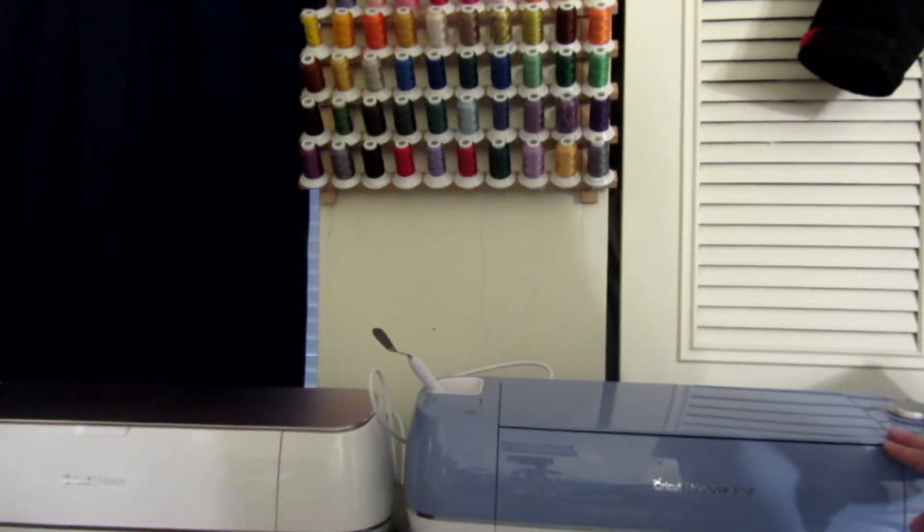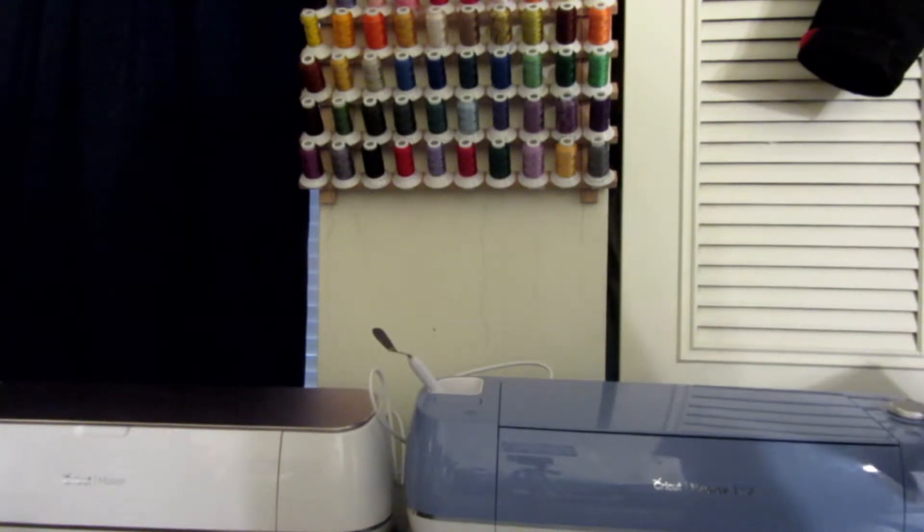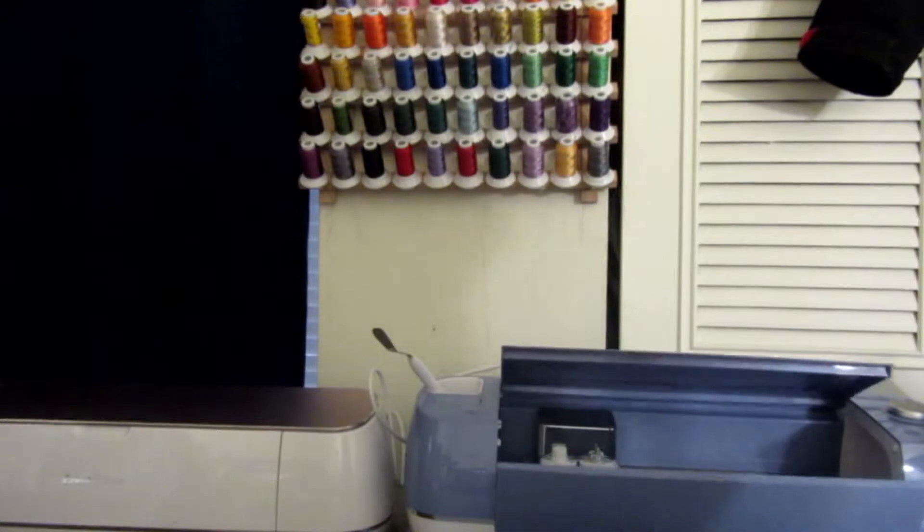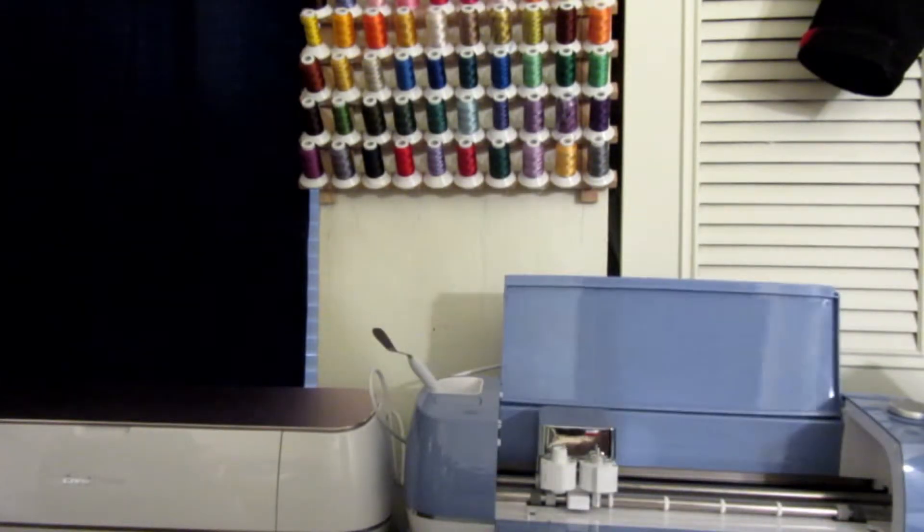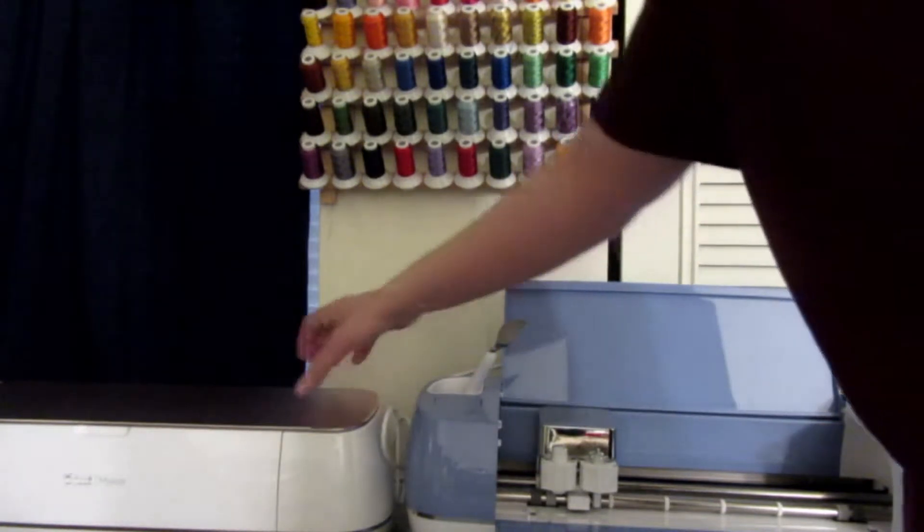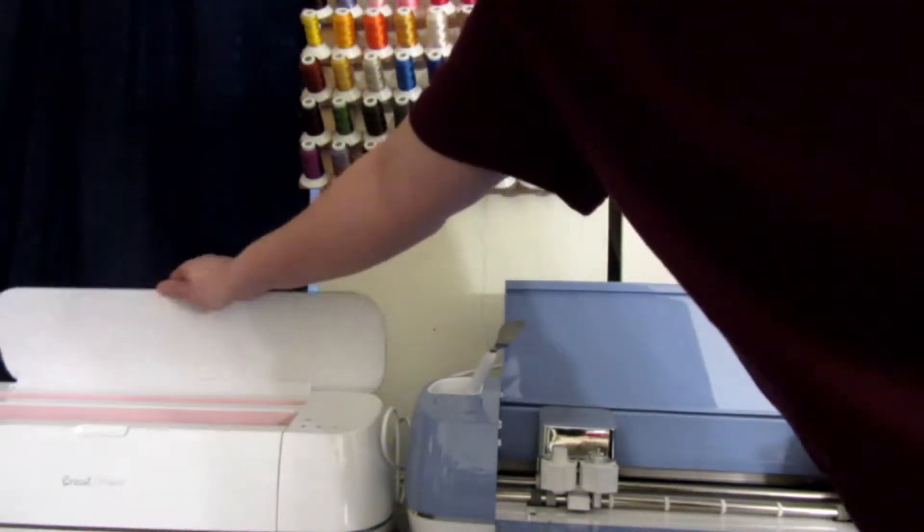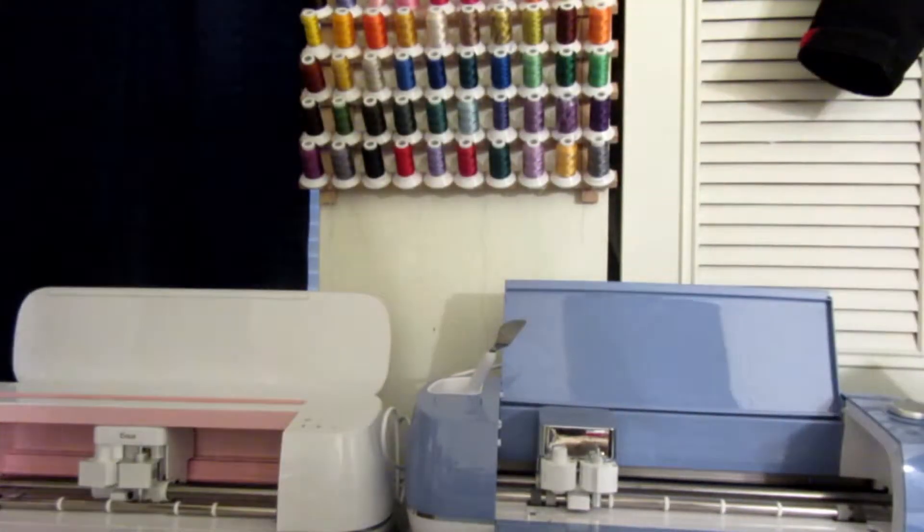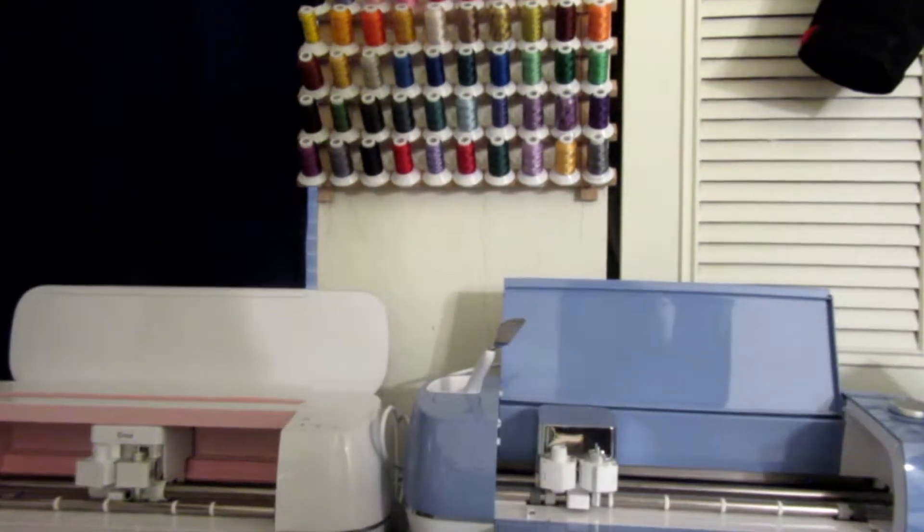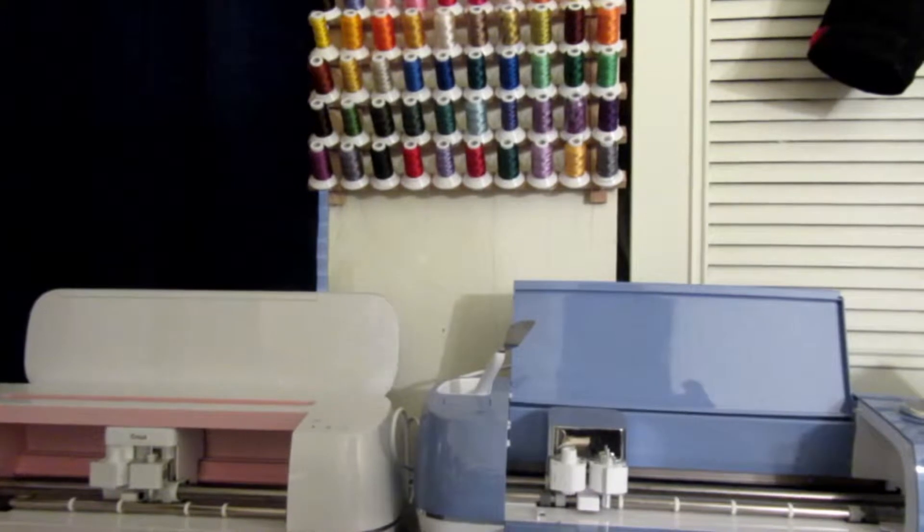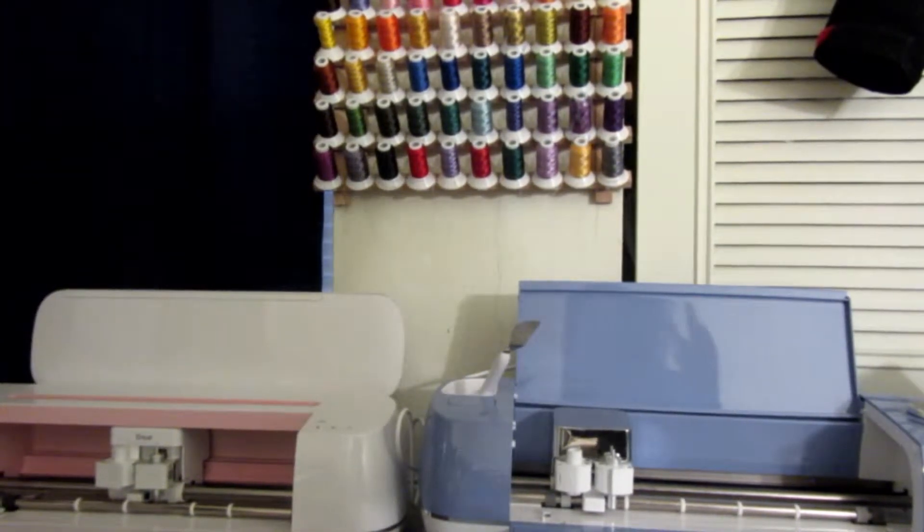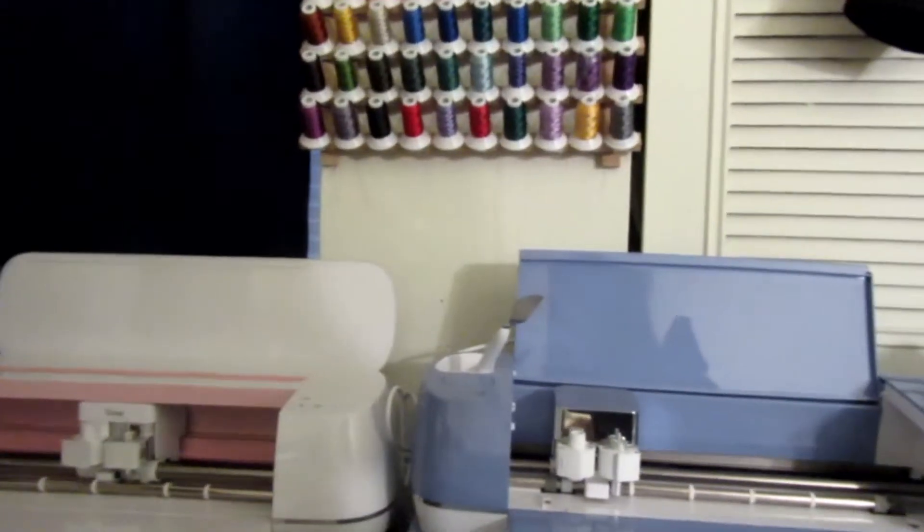So with the Cricut Explore Air 2, there's a button over here that says open. So we just hit that button, and it just kind of pops open just like so. With the Maker, it's actually a little different. You actually have to pull this open, and the bottom part comes in, as you can tell as well. We both still have the power buttons, the feeding, the little Cricut icon with the pause button, and the storage as well.